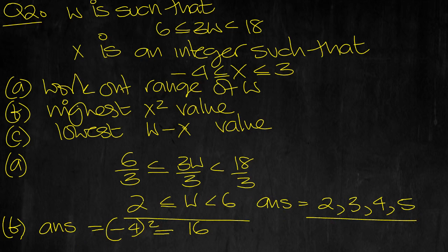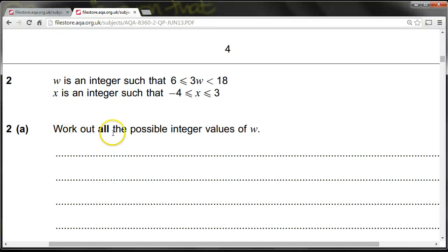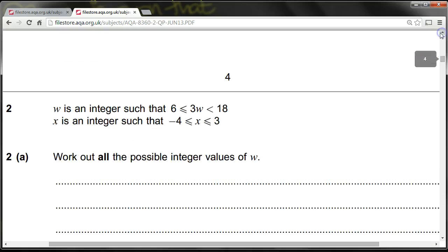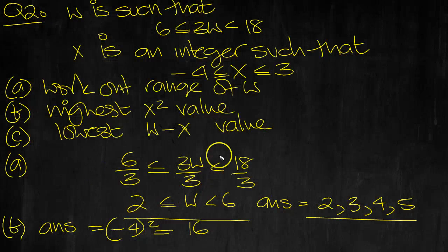Let's just check b now when we check the question on the paper. Write down the highest possible value of x squared. Now x squared is an integer, but it does go down to minus 4. OK, minus 4 squared is 16. So that's fine.